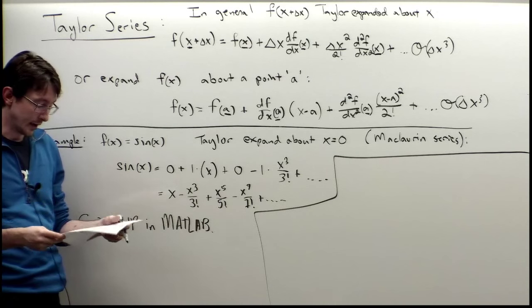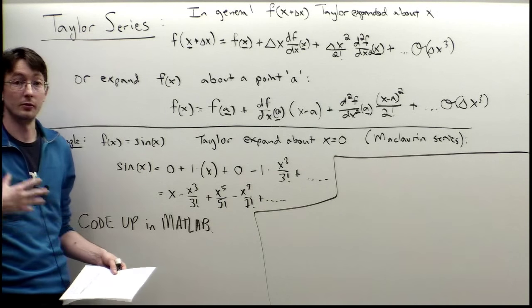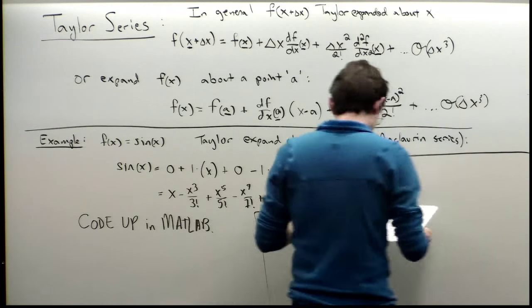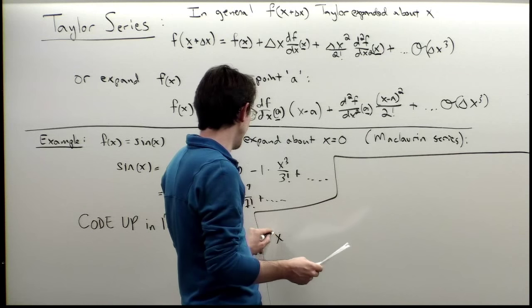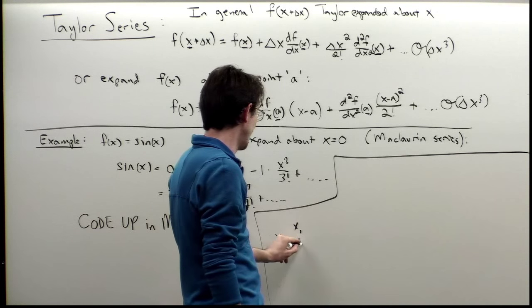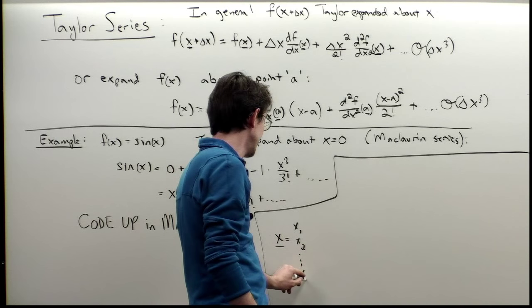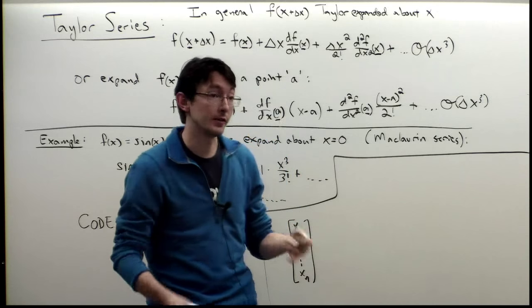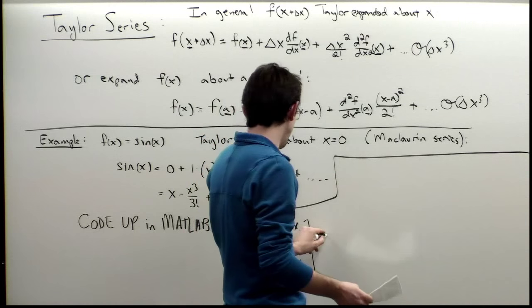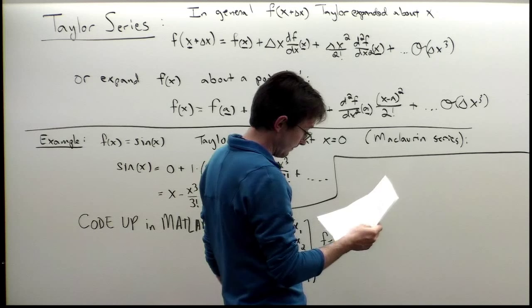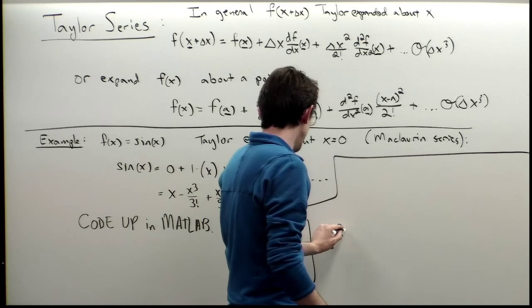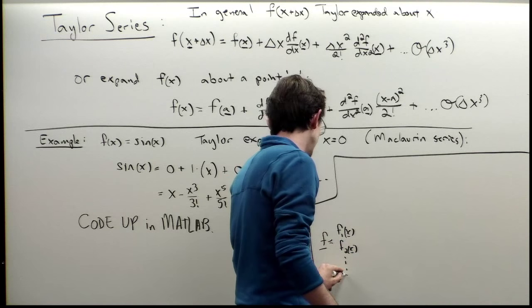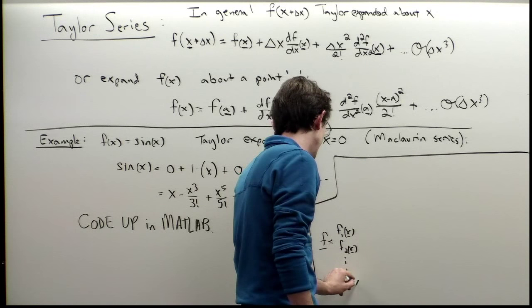Before we do that, let me tell you how this generalizes to vector-valued functions. Let's say x is a vector [x₁, x₂, ..., xₙ], and my function f is also a vector-valued function: f = [f₁(x), f₂(x), ..., fₙ(x)]. We can still Taylor expand f about some vector point x.